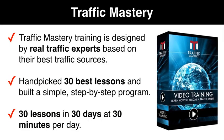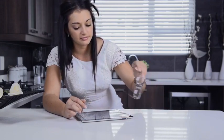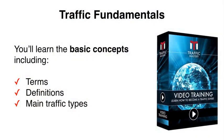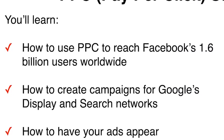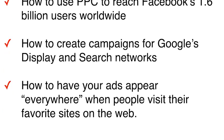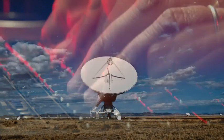With Traffic Mastery I asked each expert to create training on his or her best traffic source. Then we picked the 30 best lessons and built a simple step-by-step program. Each day for 30 days you'll go through one step in this program. The steps are easy to go through and the average time it takes is about 30 minutes. Here's just a few of the things you'll learn. Traffic fundamentals — the basic concepts you need to know before moving forward, including terms, definitions and the main types of traffic. Pay-per-click strategies — you'll learn how to reach some of Facebook's 1.6 billion users, how to create campaigns for Google's display and search networks and how to have your ads appear everywhere when people visit their favorite websites.